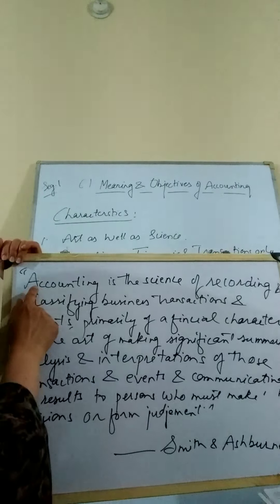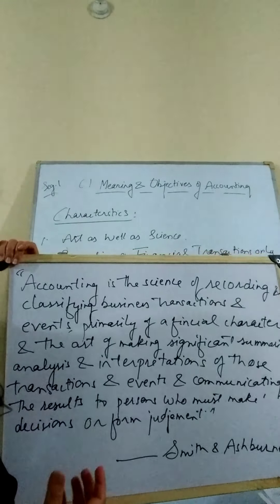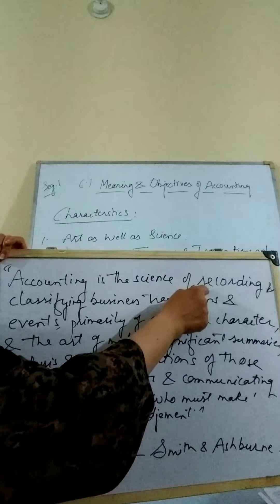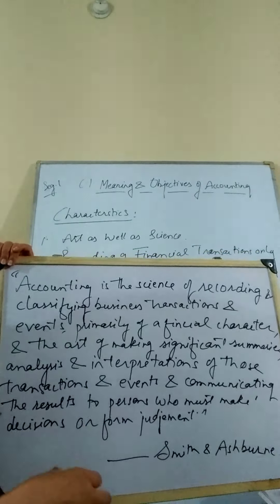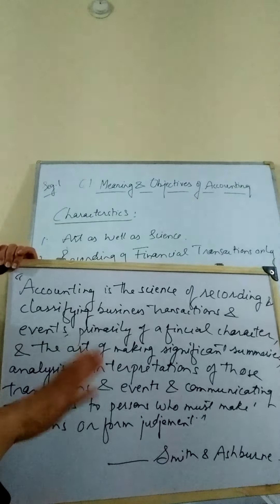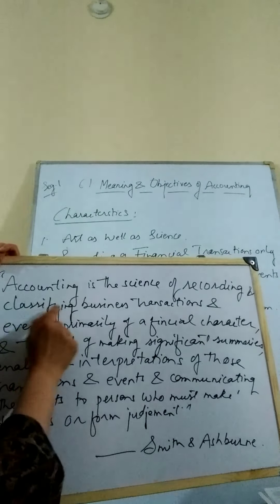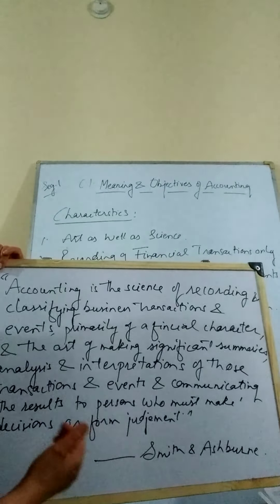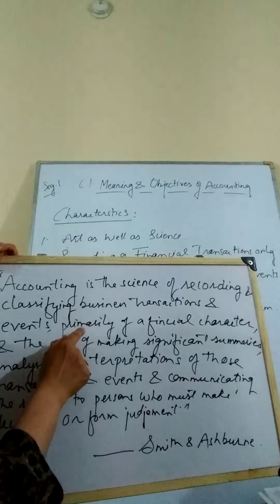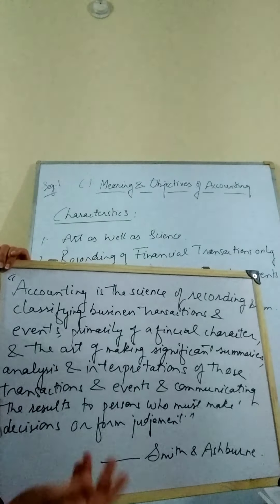Accounting is the science of recording and classifying business transactions. It is a systematic study — you have to record, meaning write, and also classify, meaning grouping similar kinds of events at one place. These transactions are the events relating to business, and they are primarily of a financial character — financial meaning monetary character.